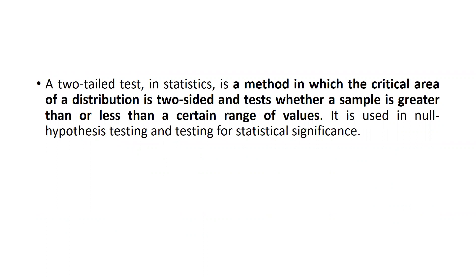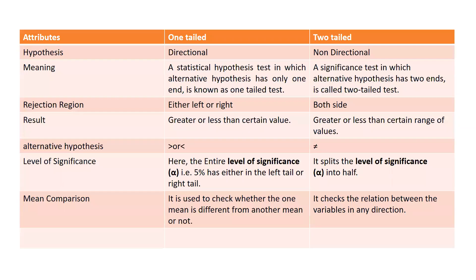A two-tailed test in statistics is a method in which the critical area of a distribution is two-sided. It tests whether a sample is greater than or less than a certain range of values. It is used in null hypothesis testing and for testing statistical significance — meaning it defines a range of values that could fall on both the positive side and the negative side.